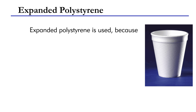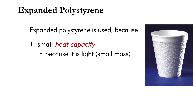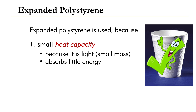On the other hand, an expanded polystyrene container is light — that is, its mass is small, therefore it has a very small heat capacity. Even though its content is hot, a polystyrene container absorbs only a small amount of energy. This reduces experimental errors.